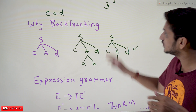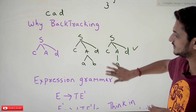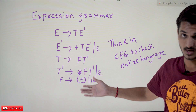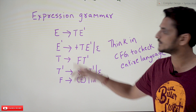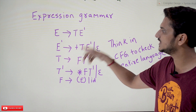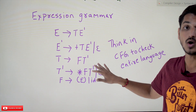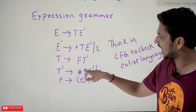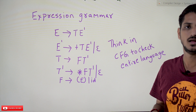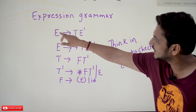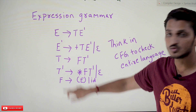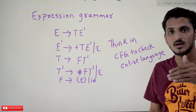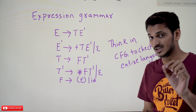Similarly, we have to write recursive descent parsing for our expression grammar. In previous classes we discussed expression grammar: E tends to T E-prime, and so on — this grammar identifies expressions involving plus and star symbols. For each non-terminal in that grammar we must write a corresponding function.